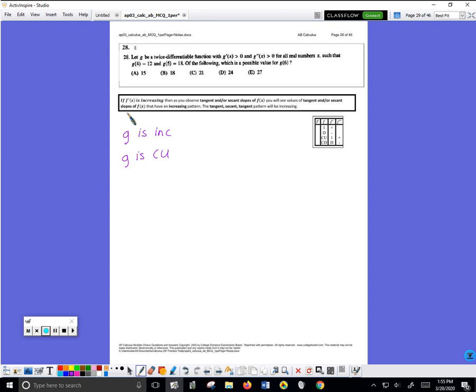We know that since G is concave up, G prime is increasing. That means if we were to look at a picture of G, as best I can tell, G is increasing and concave up.